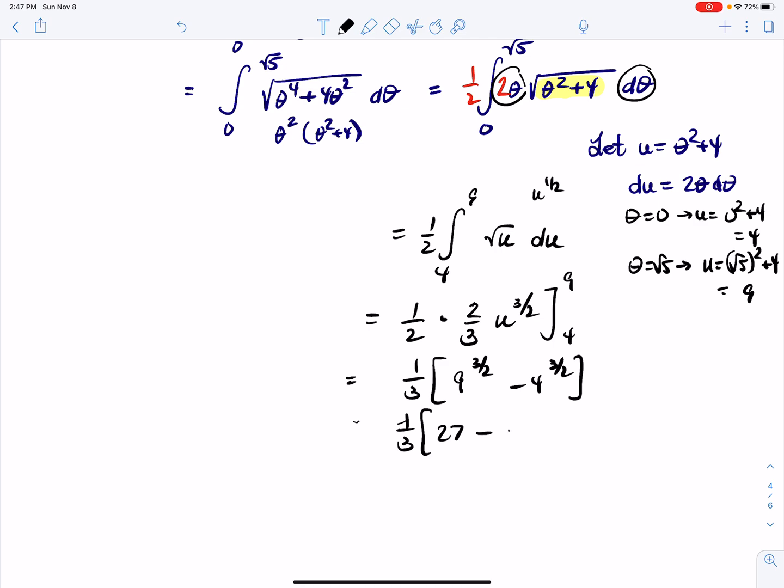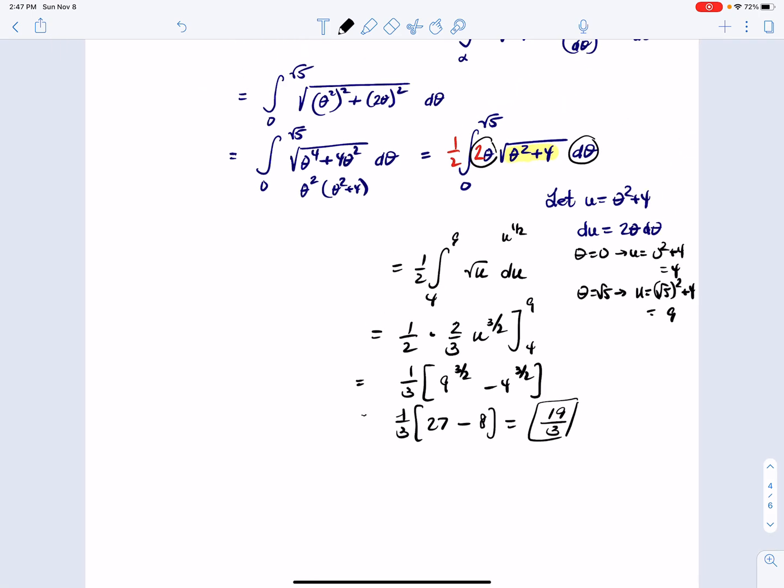Square root of 4 is 2, and 2³ = 8. So we have 19/3—again, a nice value when it wasn't really expected. That is computing the length of a curve.